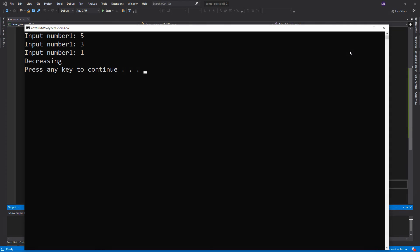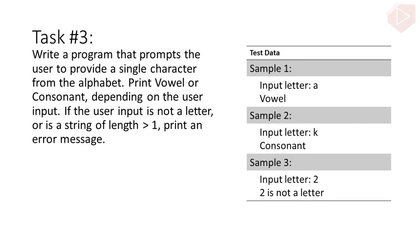Now that's how we solve a problem — create pseudocode and convert it to a C# program. Before I end this video, here is another task I would like you to solve. Write a program that prompts the user to provide a single character from the alphabet. Print 'vowel' or 'consonant' depending on the user input. If the user input is not a letter, or is a string of length greater than one, print an error message. Here is the sample test data for your guide.